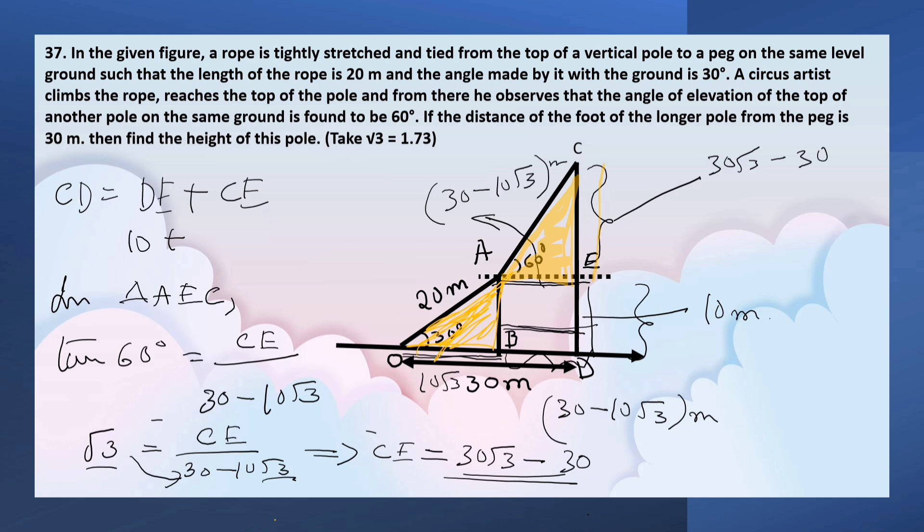This is equal to 30 times (√3 minus 1), which equals 30 times (1.73 minus 1).